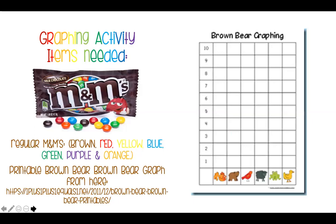For the graphing activity, some of the items that you will need are regular M&Ms. We're going to use brown, red, yellow, blue, green, and orange. You can find this Brown Bear, Brown Bear graph from this website right here: oneplusoneplusoneequalsonedotnet.